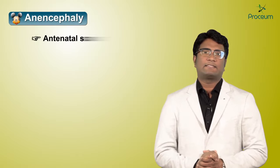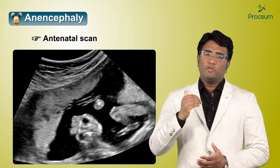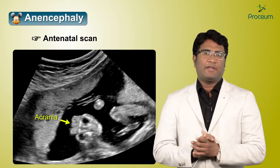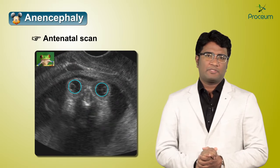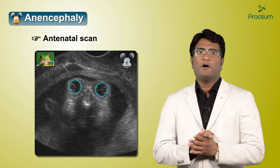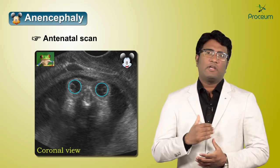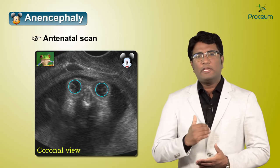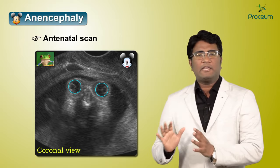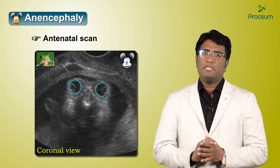Another site where we see a Mickey Mouse appearance is on an antenatal scan. In a case of anencephaly, where there is no cranial vault, the appearance of the orbits takes the shape of a frog eye appearance. This frog eye appearance, also called Mickey Mouse appearance, is seen in anencephaly on a coronal image obtained on ultrasound.